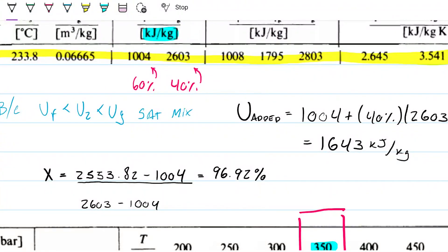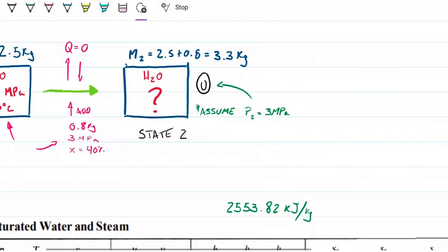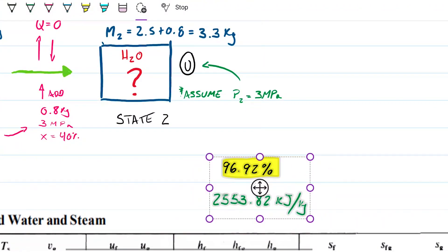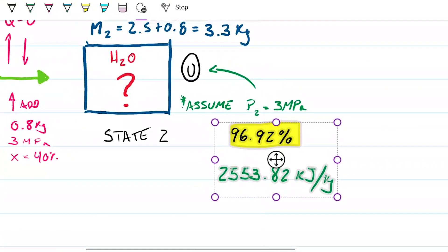So this final state, let me just grab this and take this up to our question mark here. Our final state, according to what we calculated, has a pressure of 3 megapascals, an internal energy of 2553 kilojoules per kilogram,